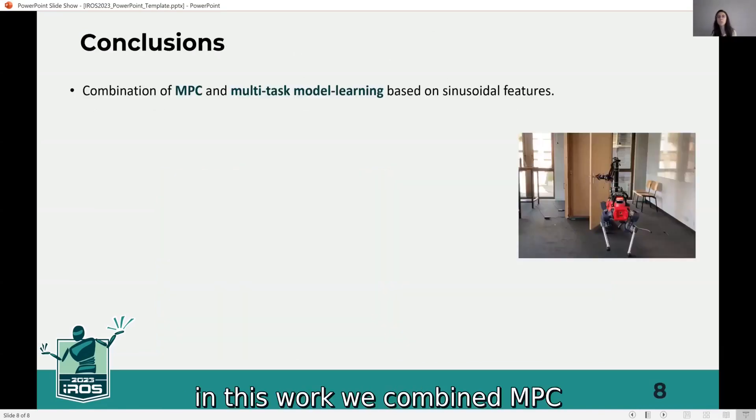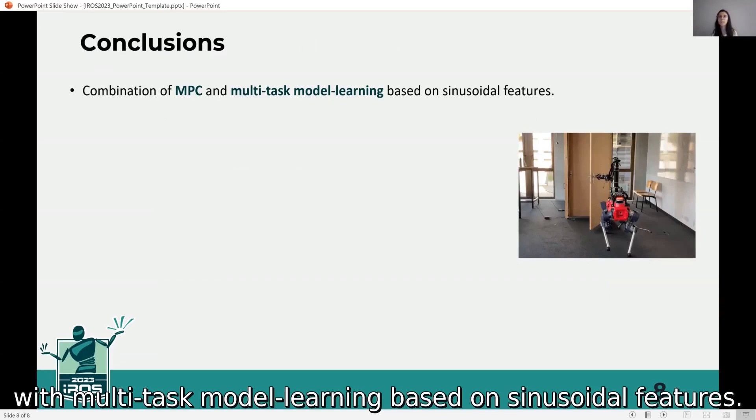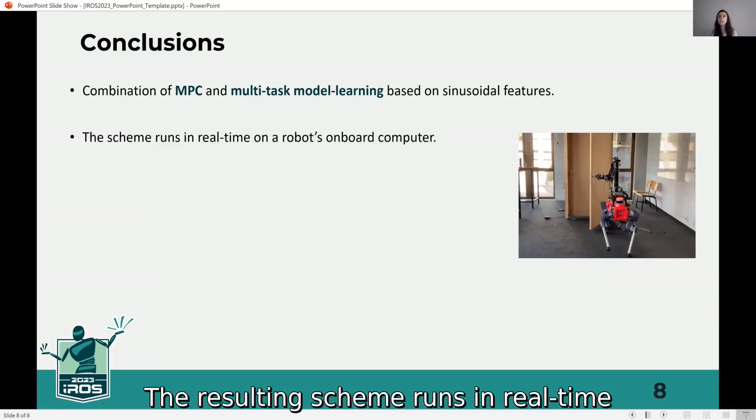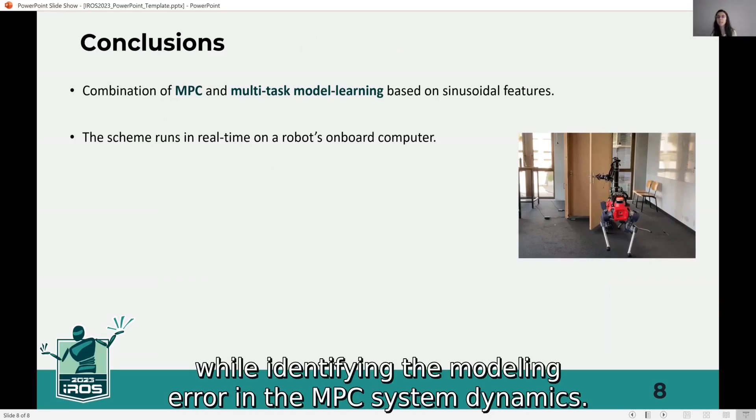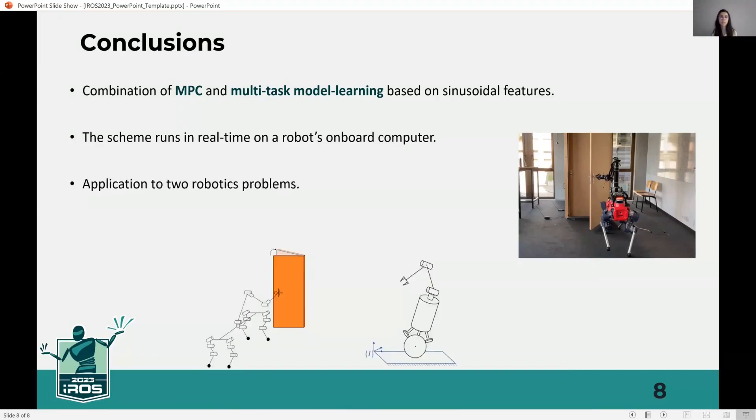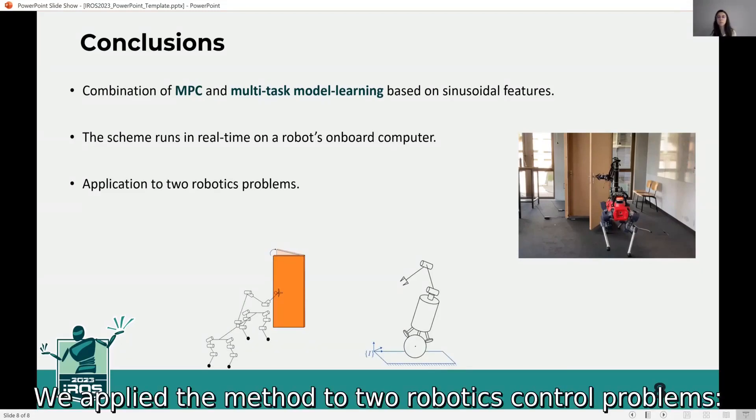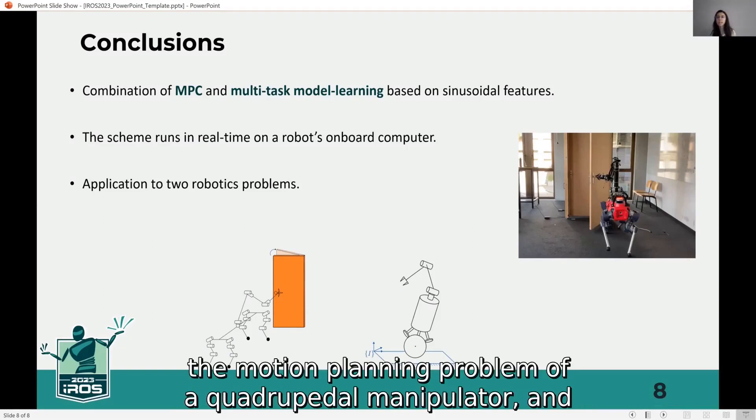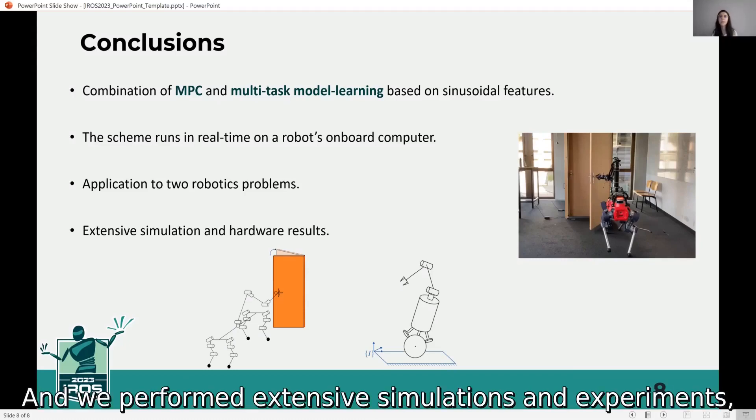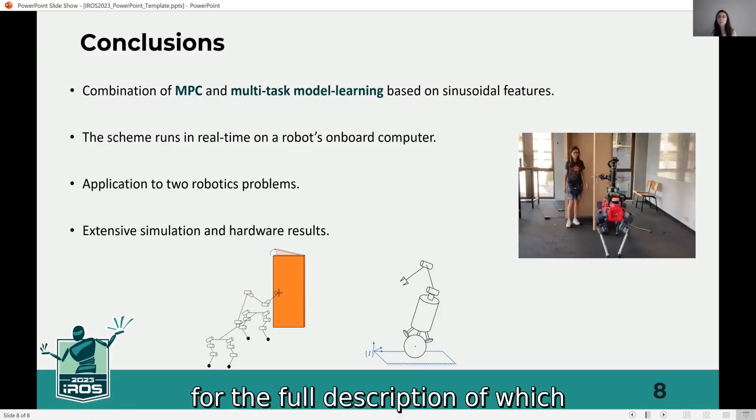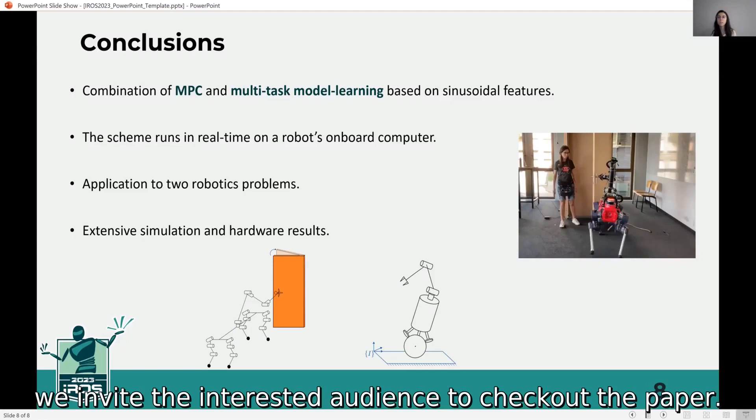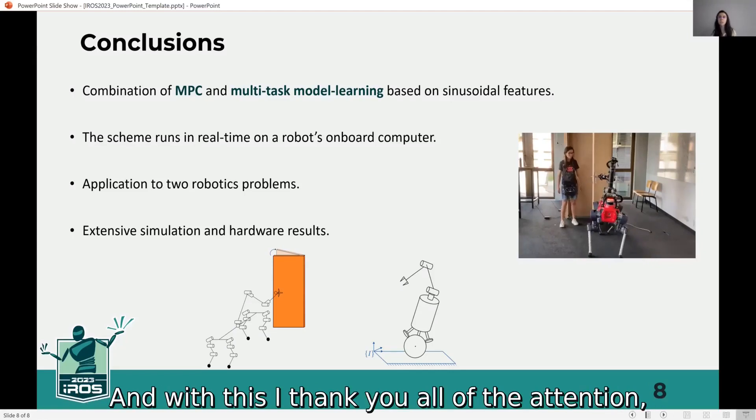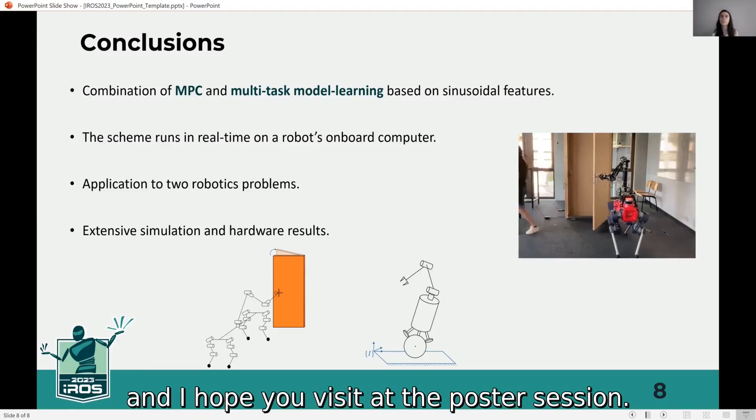To conclude, in this work, we combined MPC with multi-task model learning based on sinusoidal features. The resulting scheme runs in real-time on a robot's onboard computer while identifying the modeling error in the MPC system dynamics. We applied the method to two robotic control problems: the motion planning problem of a quadrupedal manipulator and the motion control problem of a ballbot. And we performed extensive simulations and experimental results for the full description, for which we invite the interested audience to check out the paper. And with this, I thank you all for the attention and I hope you enjoyed the poster session.